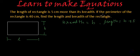And now let's read the second part of the statement. So the second part says if the perimeter of the rectangle is 40 centimeters, find the length and breadth of the rectangle. So what is the perimeter of the rectangle? Perimeter of the rectangle is 2 times length plus breadth.